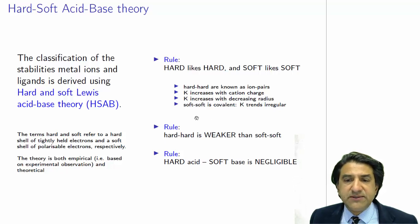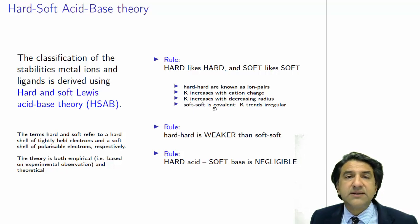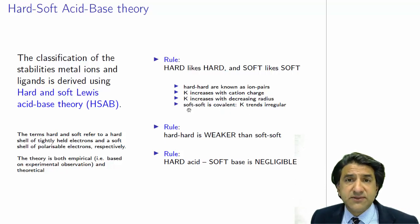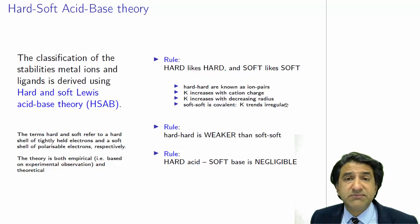Those are three rules for hard-type interactions. Soft-soft interactions involve the interactions of two polarizable species, meaning the electrons can move around on those species quite easily — they're not highly charged. Those kinds of things form dative bonds, and their bonds are more chemical. Soft-soft interactions are covalent. Covalent-type interactions tend to be the strongest, because electron-pair-sharing bonds are stronger than ionic bonds, generally speaking. So soft likes soft, hard likes hard, but soft-soft is stronger than hard-hard. The K-trends are a little irregular for soft-soft interactions because they're chemical — you have to know something about the chemistry.